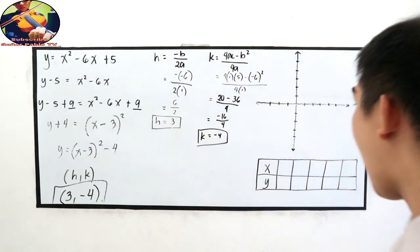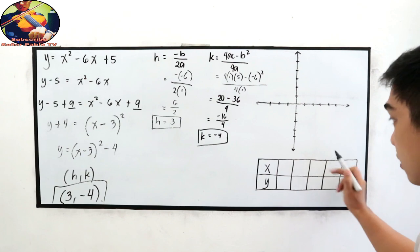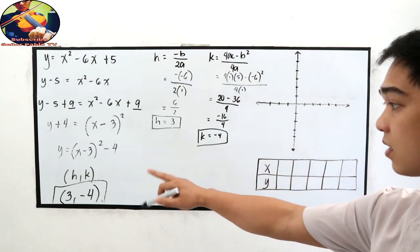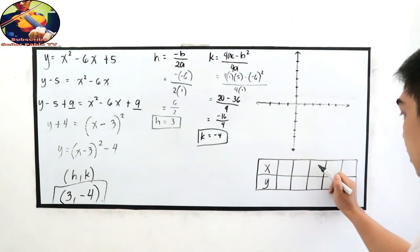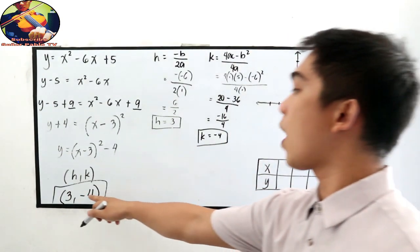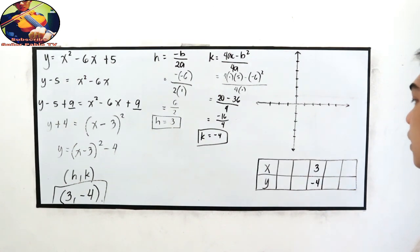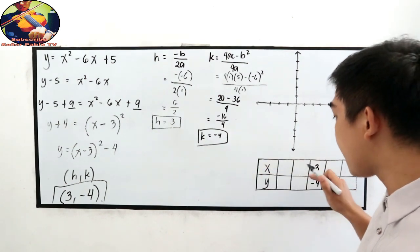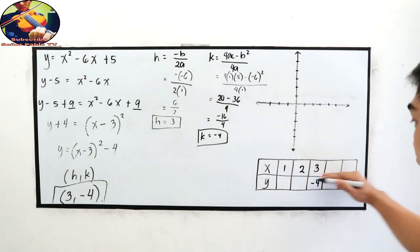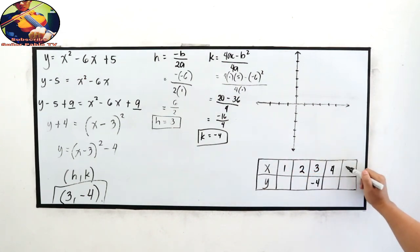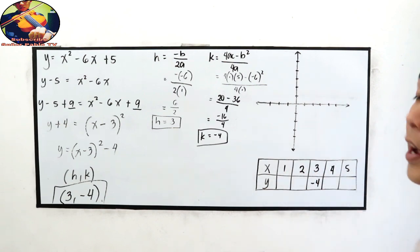Since we now have the turning point, it goes in the middle of our table of values. Our x equals h equals 3, and y equals negative 4. On the left side of 3 we have x equals 2 and x equals 1, and on the right side we have x equals 4 and x equals 5. So our x values are 1, 2, 3, 4, and 5.